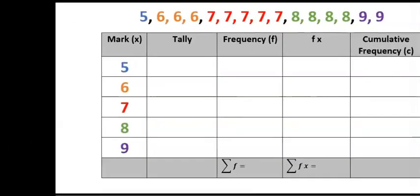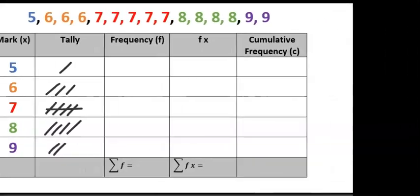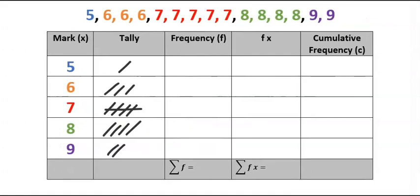Next step, draw the tally. 5 is just only one. 6 is three. 7 is five, so after four, the fifth one goes across. 8 is four, and 9 is two. Next, complete the frequency. The frequency of 5 is just only one. 6 repeated three times, 7 repeated five times, 8 repeated four times, and 9 repeated twice.